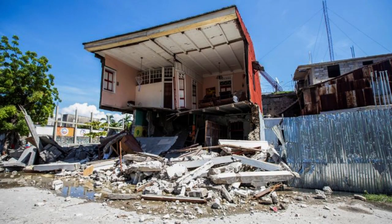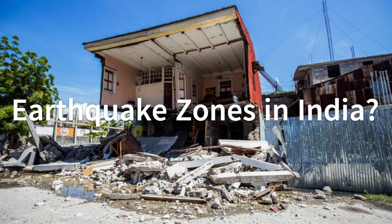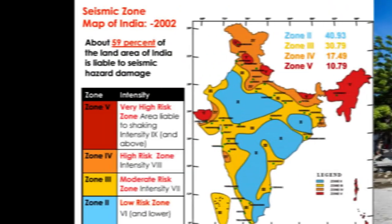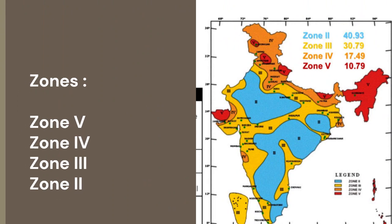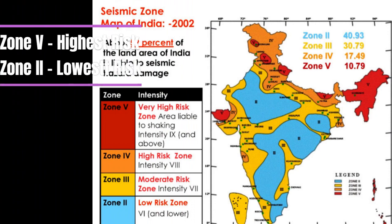Question 9: How many earthquake zones are there in India and which zone has the highest probability of earthquake? Answer: There are four types of earthquake zones in India: Zone 5, 4, 3, and 2. Zone 5 has the highest probability of occurrence of earthquake, whereas Zone 2 has the least probability of occurrence.